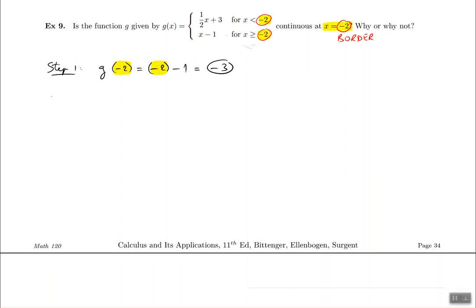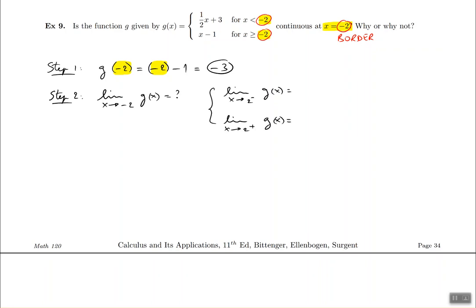The next challenge is to find the limit as x approaches the border, negative 2, on g of x. In these particular problems we cannot do the limit all at once — we have to separate the left limit from the right limit. We have to do a limit as x approaches negative 2 from the left, and a limit as x approaches negative 2 from the right. We have to do that because negative 2 is the border, so we have to separate the graphs since we're not using the same equation on each side.